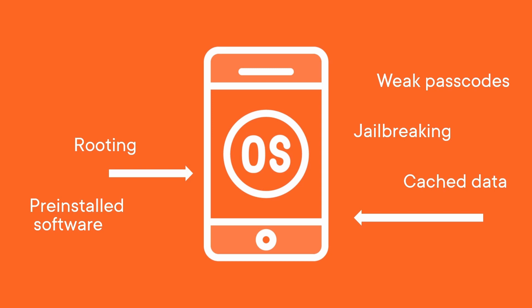Then we have to worry about networking technologies — all the Wi-Fi weaknesses we talked about in the ethical hacking wireless networks course, things like rogue access points, weak encryption, sniffing, man-in-the-middle attacks, DNS poisoning, and session hijacking — that big long list we covered.